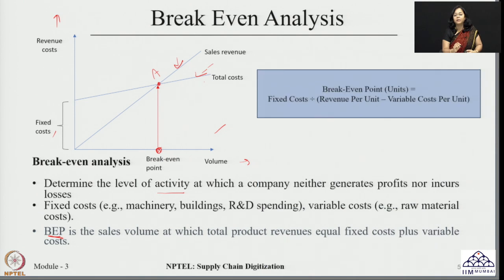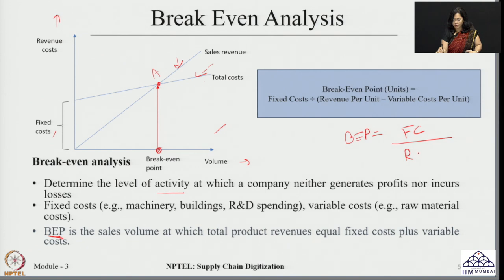How do we calculate that? There is a very simple formula: the break-even point equals fixed cost divided by revenue per unit minus variable cost per unit. This gives you the volume at which the company is facing neither profit nor loss. Let us see how this break-even analysis can be used for taking a critical decision related to facility selection.